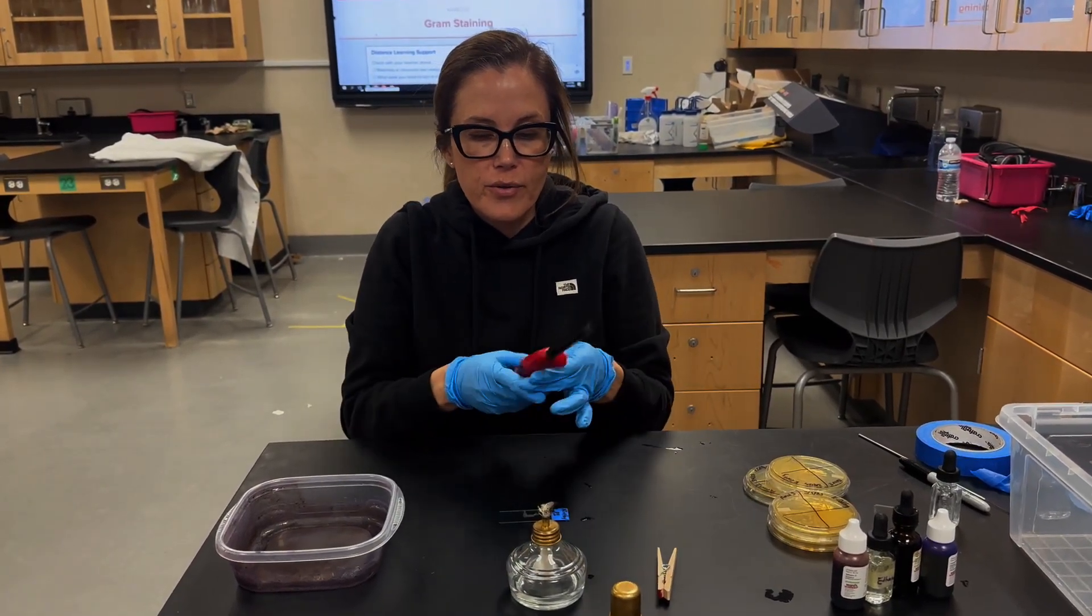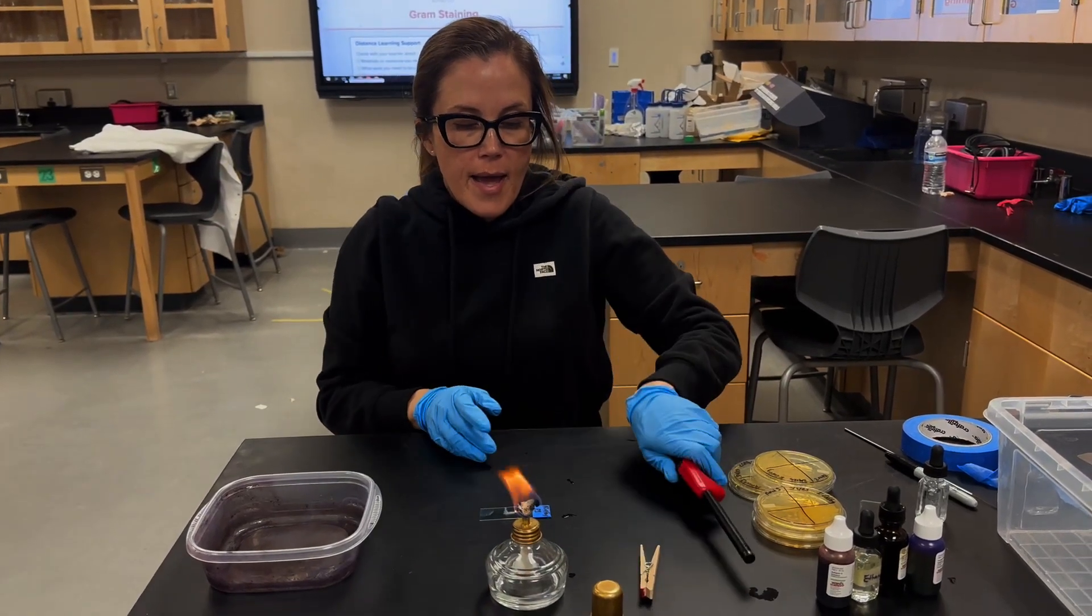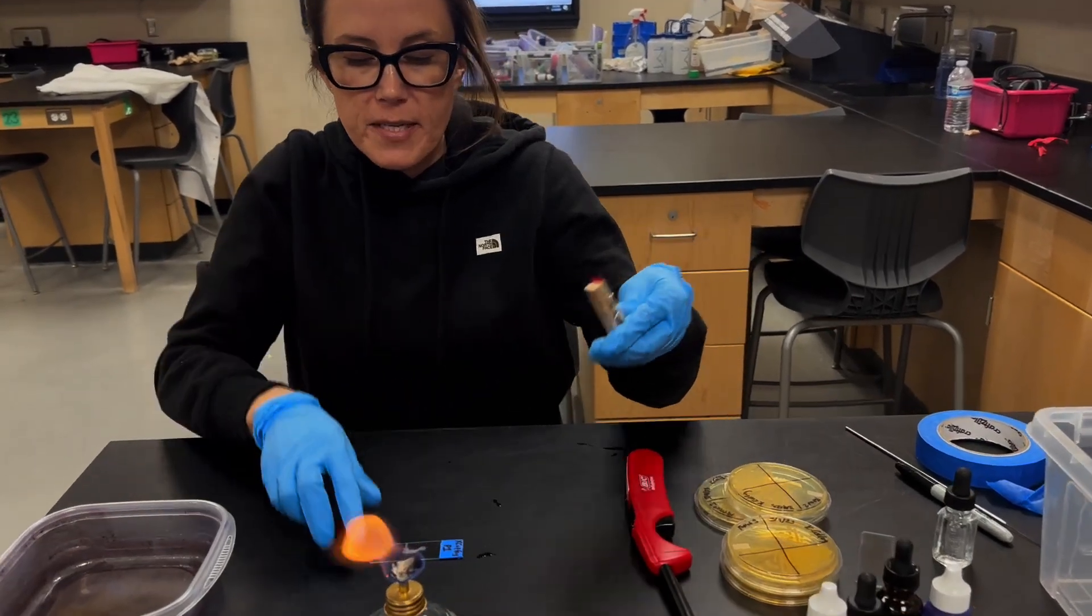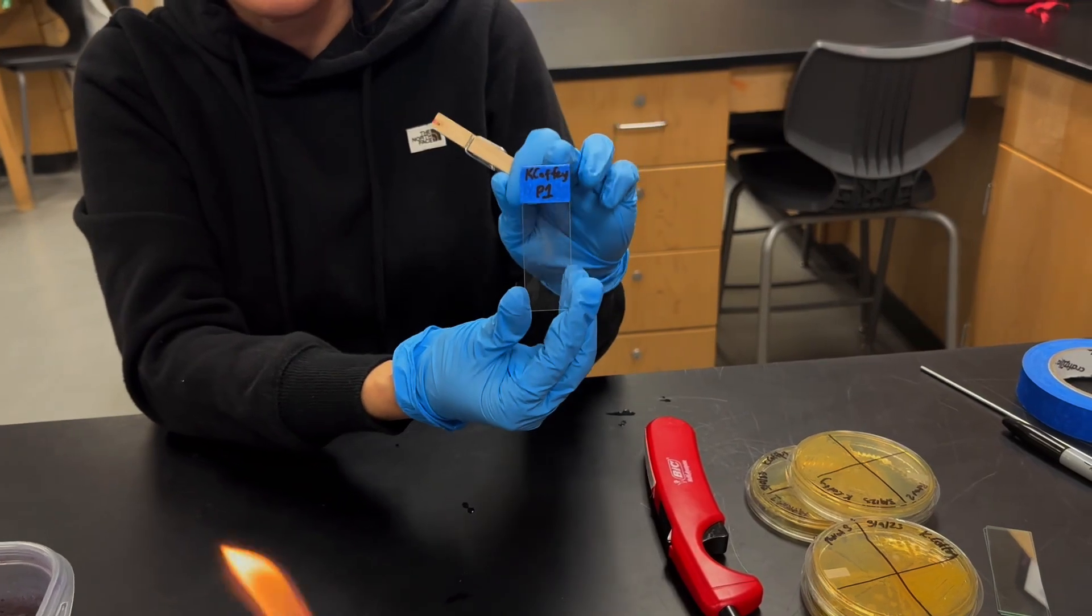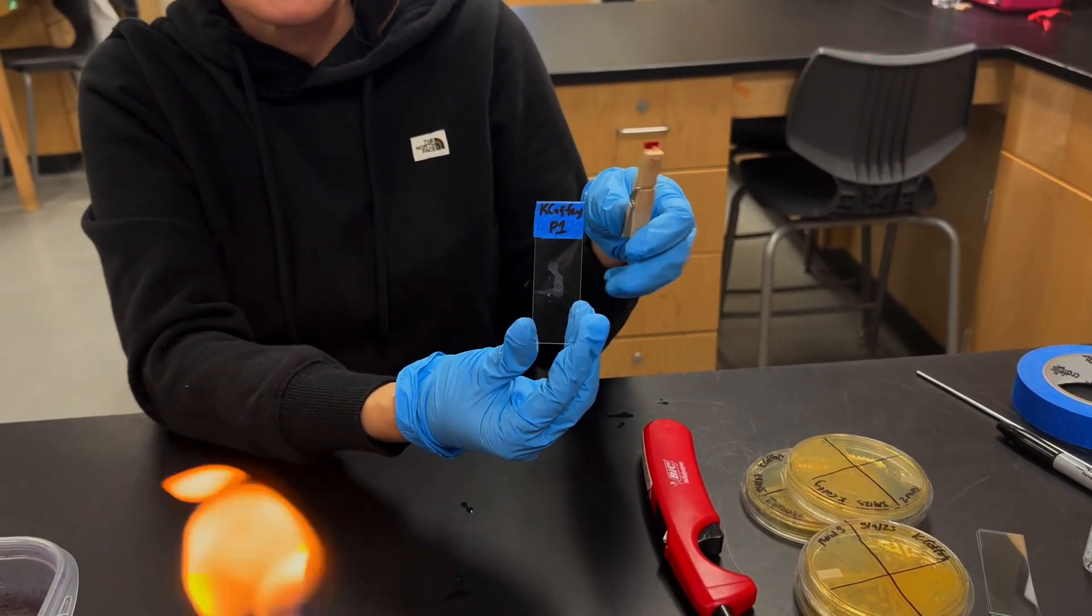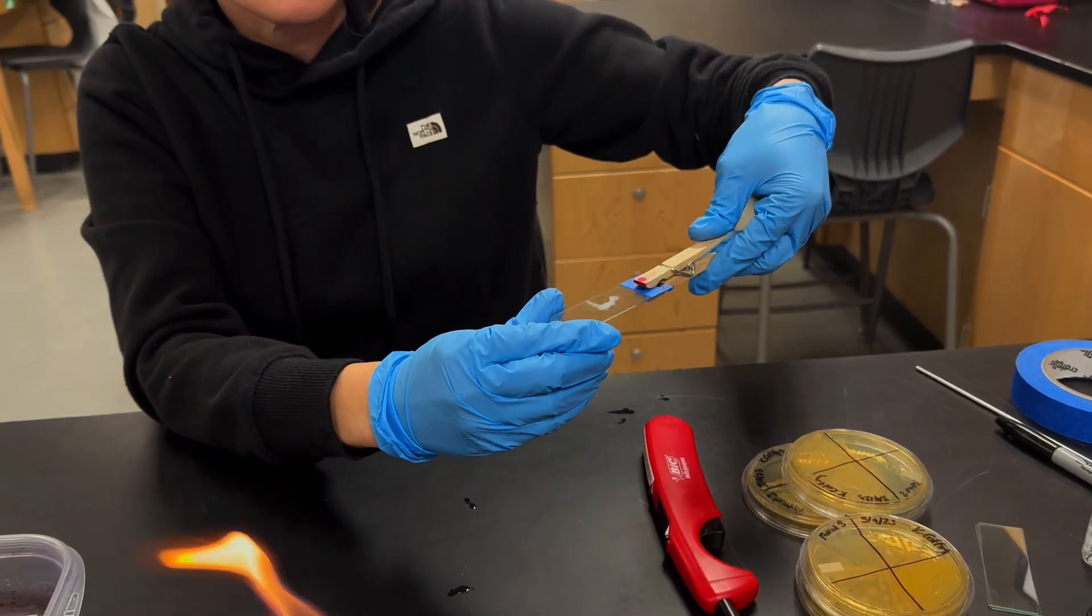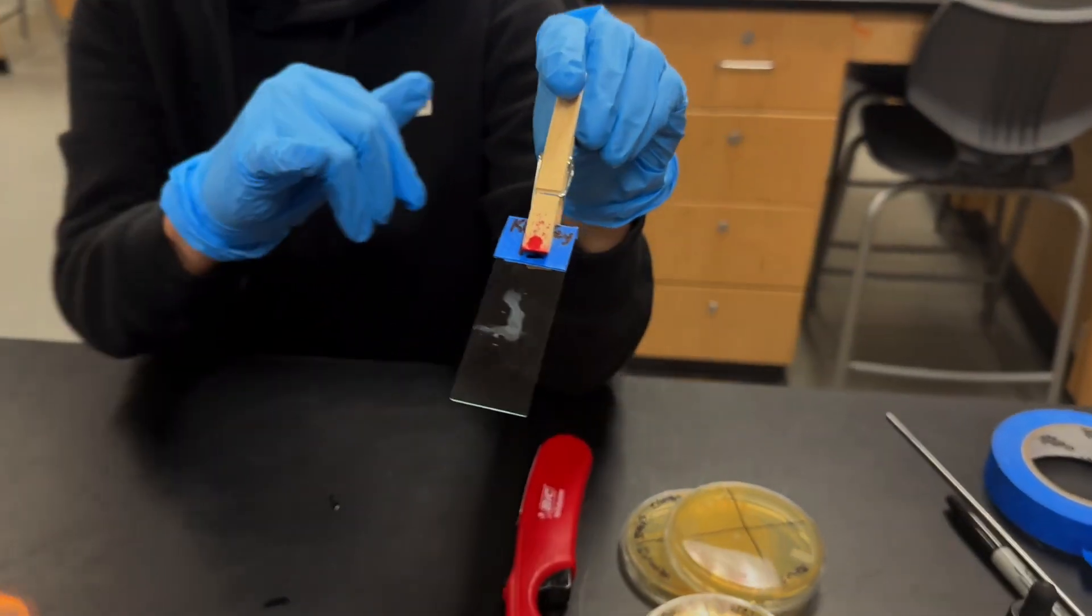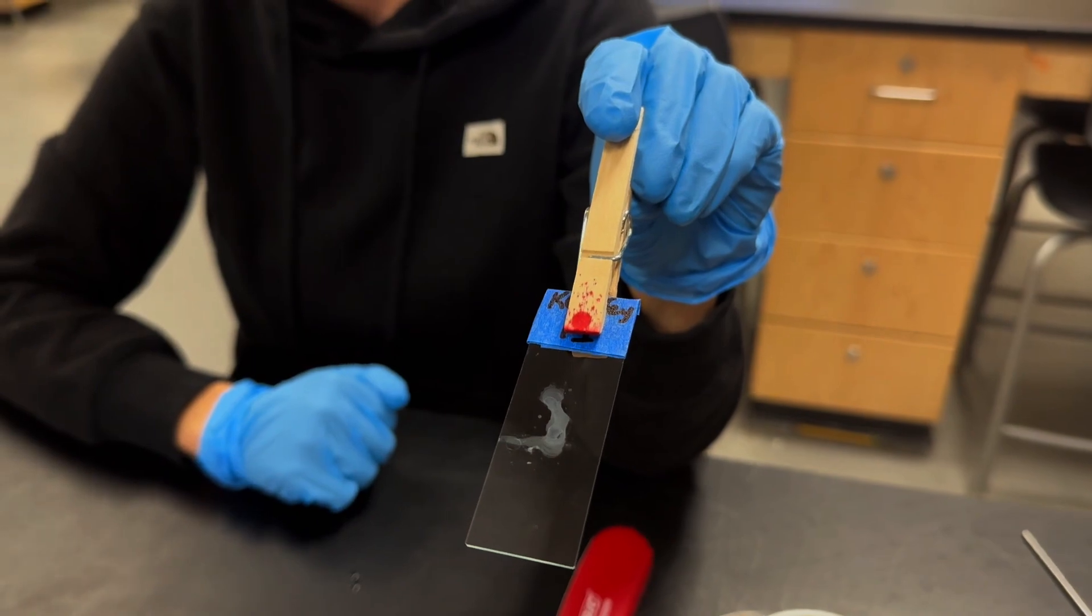And in my class, we use these clothespins and you can see I've actually, while we were waiting, I added a label to the slide. So I just put my name and period my class period here on the slide. And I'm going to use the clothespin to help me with this process for staining. And the bacterial specimen is on top of this slide. So it's facing upward and that's important.